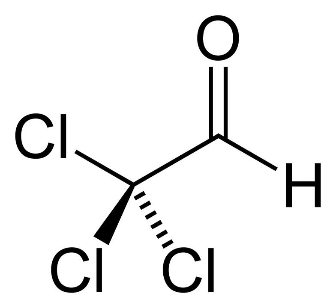Chloral tends to form adducts with water to give chloral hydrate and alcohols. Aside from its tendency to hydrate, chloral is notable as a building block in the synthesis of DDT. For this purpose, chloral is treated with chlorobenzene in the presence of a catalytic amount of sulfuric acid: Cl3-CCHO plus 2C6H5Cl gives Cl3CCH(C6H4Cl)2 plus H2O. This reaction was described by Othmar Ziedler in 1874. The related herbicide methoxychlor is also produced from chloral.